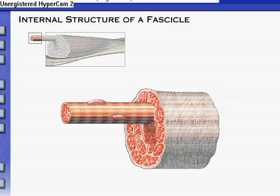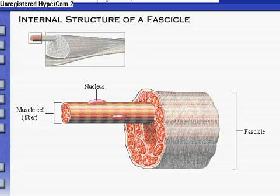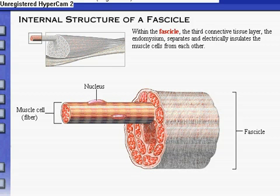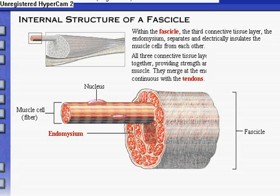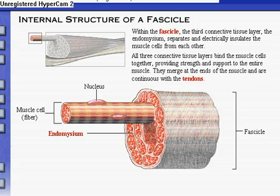This view provides a closer look at the internal structure of a fascicle. Recall that fascicles are bundles of muscle cells. Within the fascicle, the third connective tissue layer, the endomysium, separates and electrically insulates the muscle cells from each other. All three connective tissue layers — the endomysium, the perimysium, and epimysium — bind the muscle cells together, providing strength and support to the entire muscle. The connective tissue layers merge at the ends of the muscle and are continuous with the tendons.